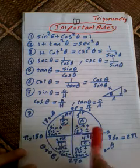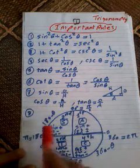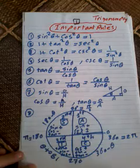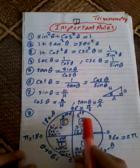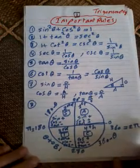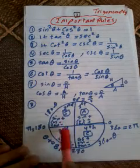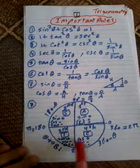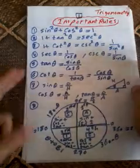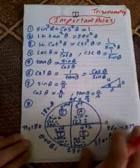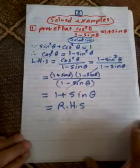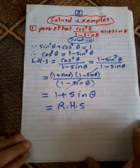In the unit circle: first quadrant 0 to 90, second quadrant 90 to 180, third quadrant 180 to 270, fourth quadrant 270 to 360. In the first quadrant all trig functions are positive. In the second, sine is positive. In the third, tan is positive. In the fourth, cosine is positive. This is called the ASTC rule.